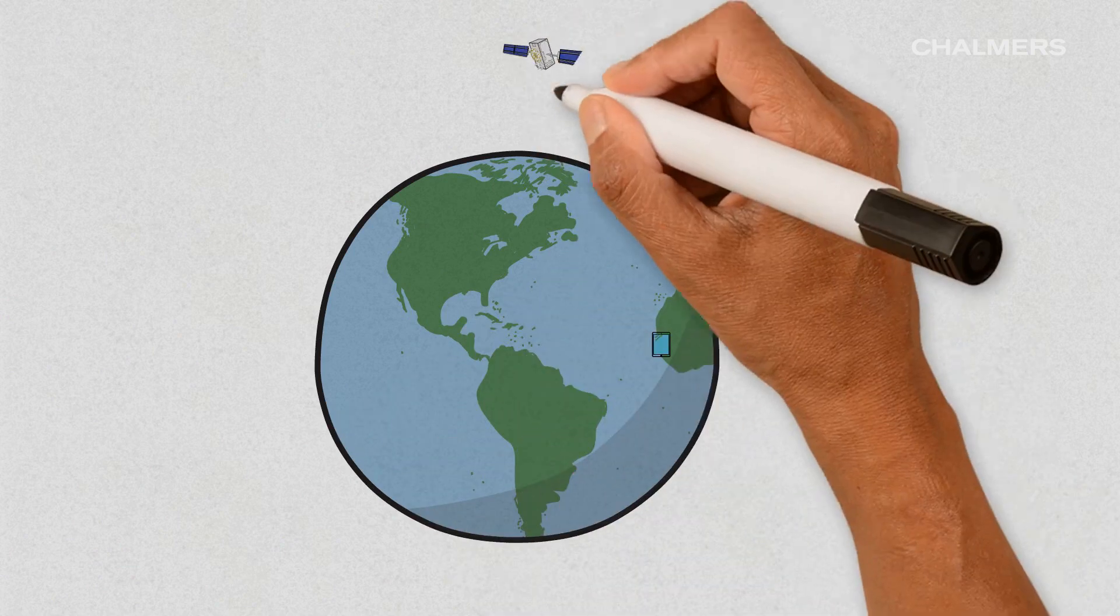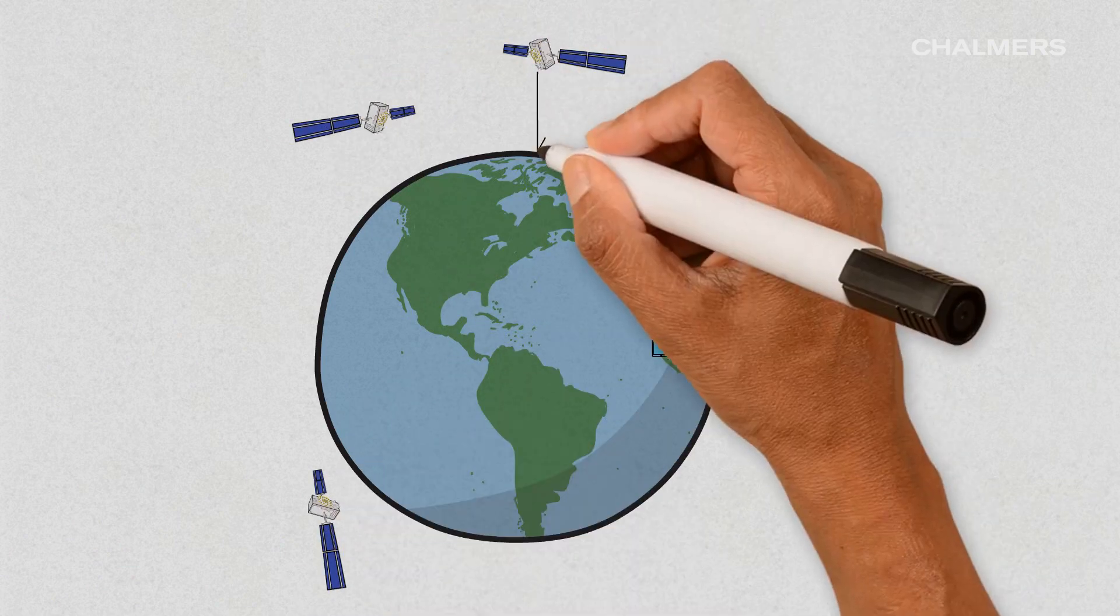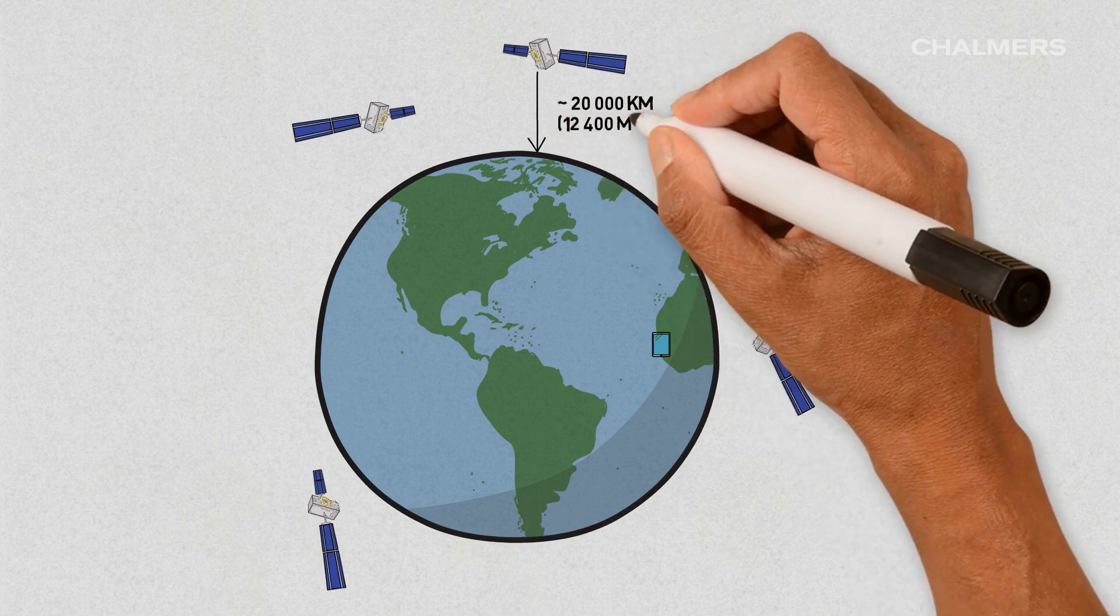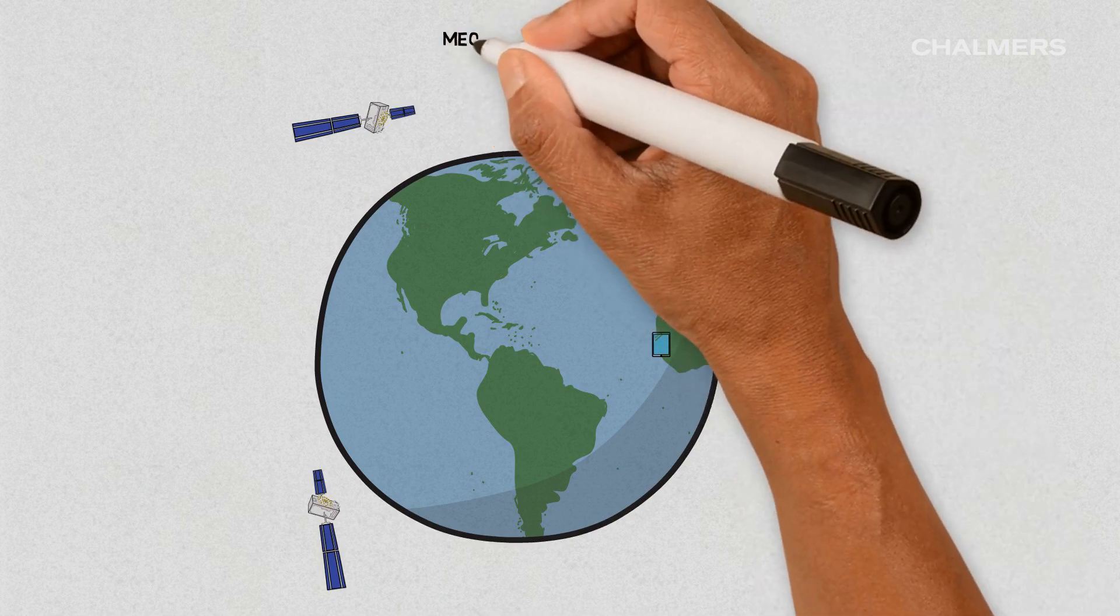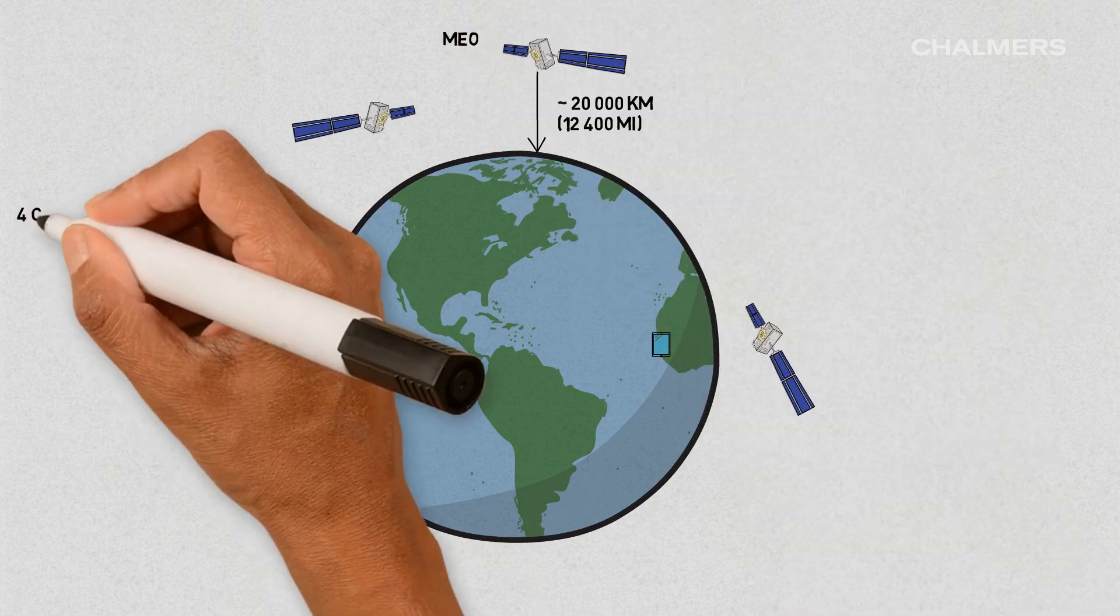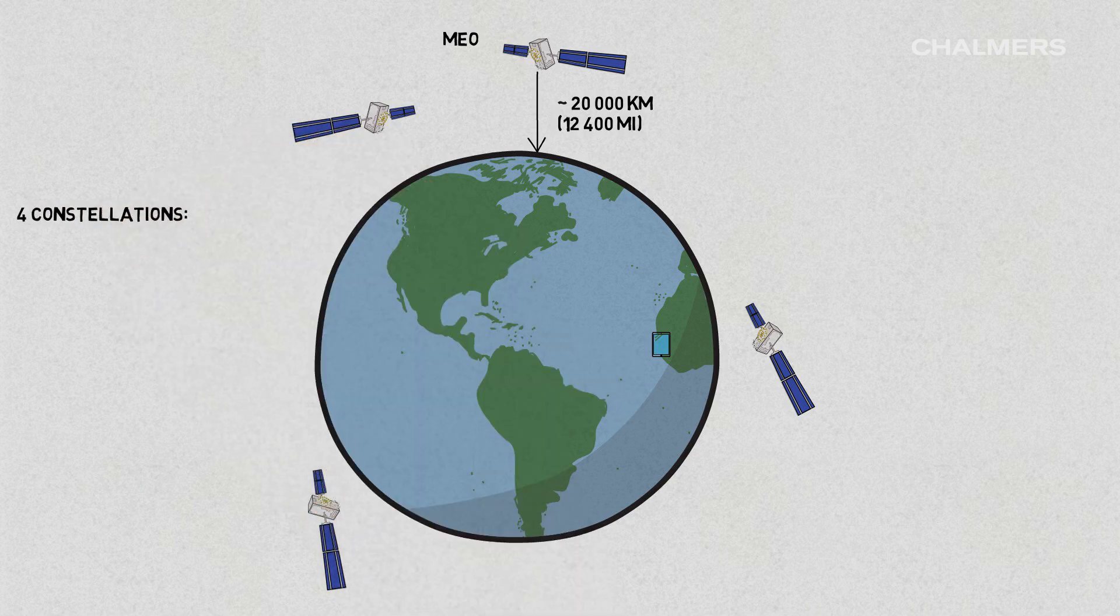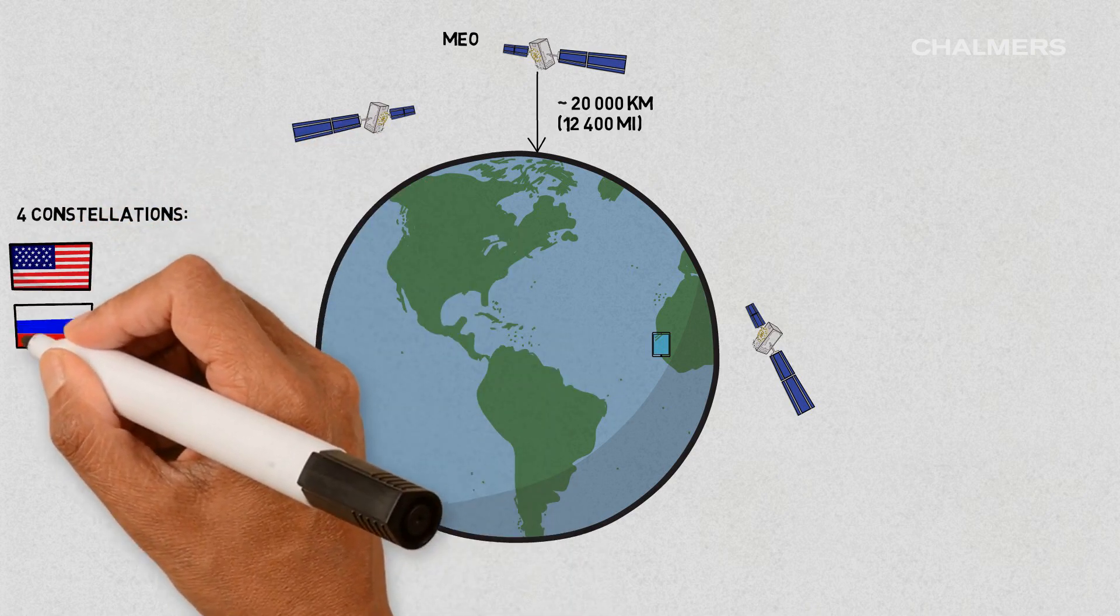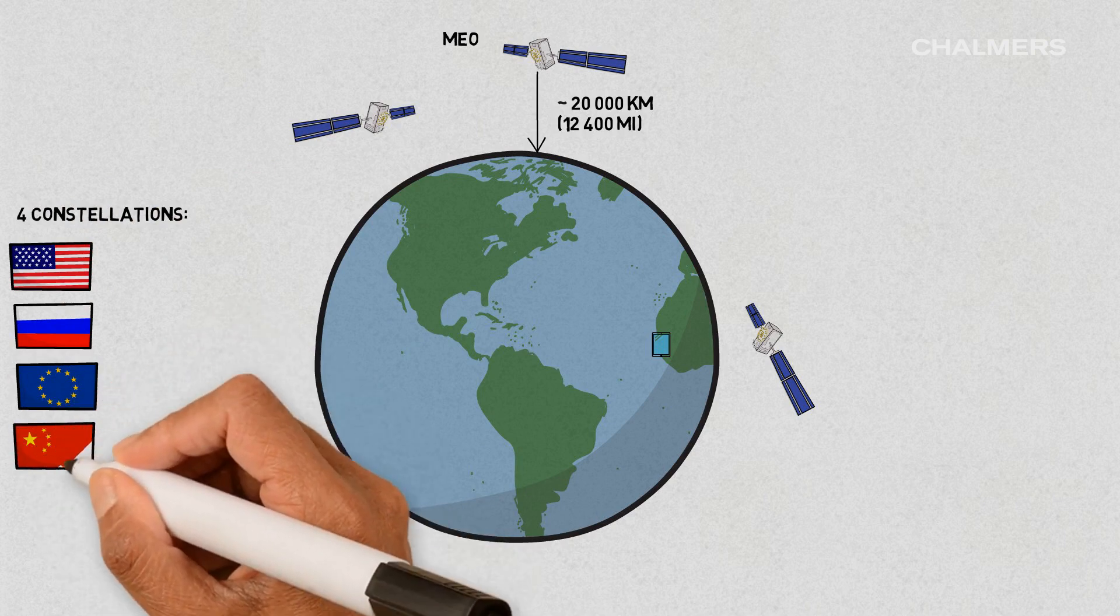The satellites themselves orbit the Earth at altitudes of roughly 20,000 kilometers. They are located on so-called medium Earth orbits. There are different global navigation satellite systems available. Over the past few decades, four systems reached global coverage.